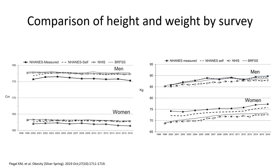These two graphs compare height on the left and body weight on the right for NHANES — including measurements and self-report — National Health Interview Survey, and BRFSS. On the left with height, we can see that both men and women overestimate their height, although women to a smaller extent. On the right, we can see that women underestimate their weight, and that most estimates of self-report are fairly consistent with measured weight for men. Think about the implications for an indicator like BMI or nutritional status. Obesity prevalence will be most accurate with NHANES using measured weight and height. Obesity prevalence will certainly be underestimated with self-reported height and weight, whether from NHANES self-report, the National Health Interview Survey, or BRFSS.